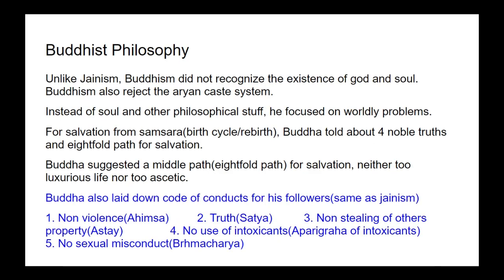Unlike Jainism, Buddhism did not recognize the existence of God and soul, and also rejected the caste system introduced by the Vedas. Instead of soul and other philosophical concepts, Buddha focused on worldly problems. For salvation from samsara or the birth cycle, Buddha told about the four noble truths and eightfold path. He suggested a middle path — neither too luxurious nor too ascetic. Buddha also laid down five codes of conduct for followers: non-violence, truth, non-stealing, no use of intoxicants, and no sexual misconduct.